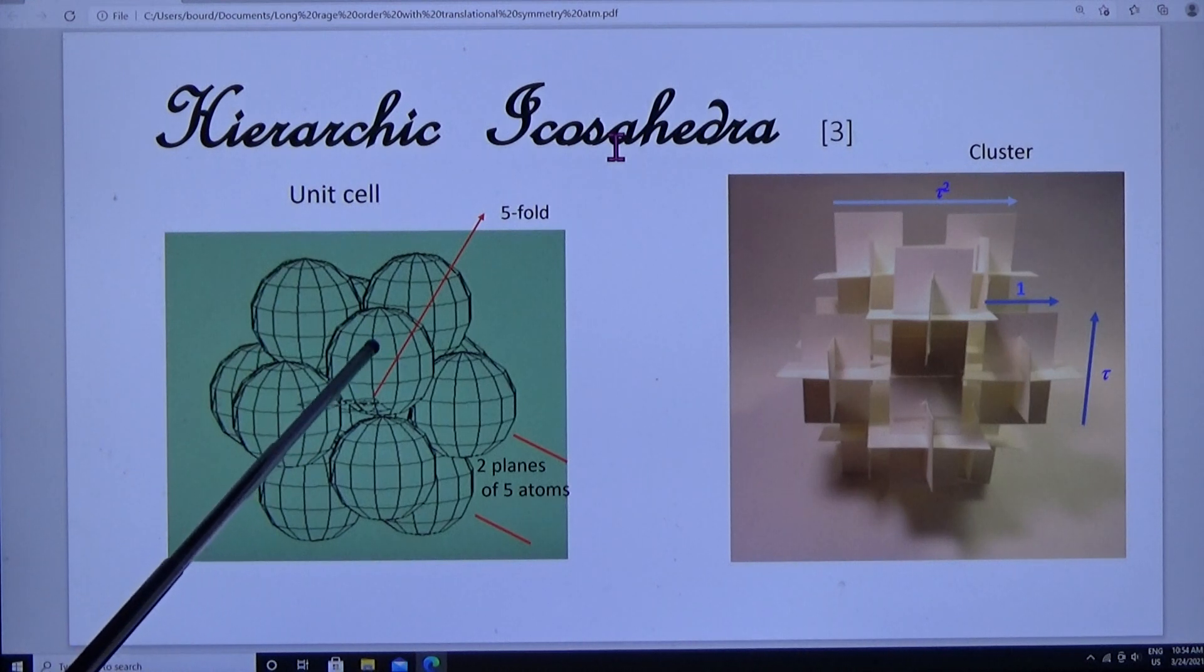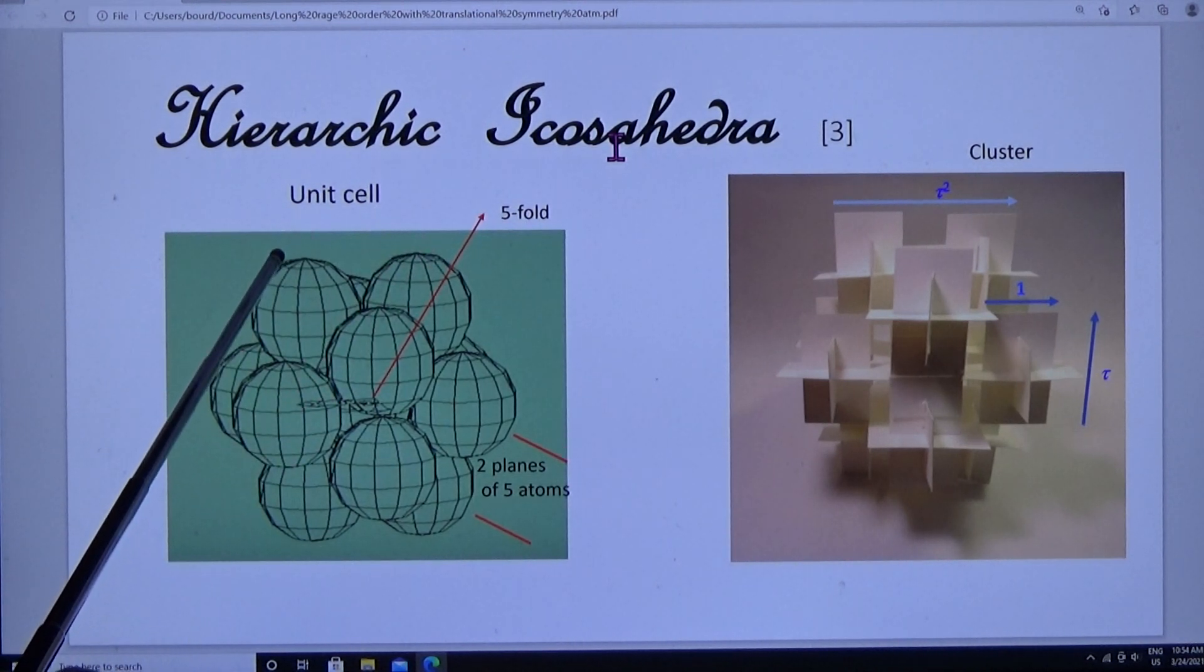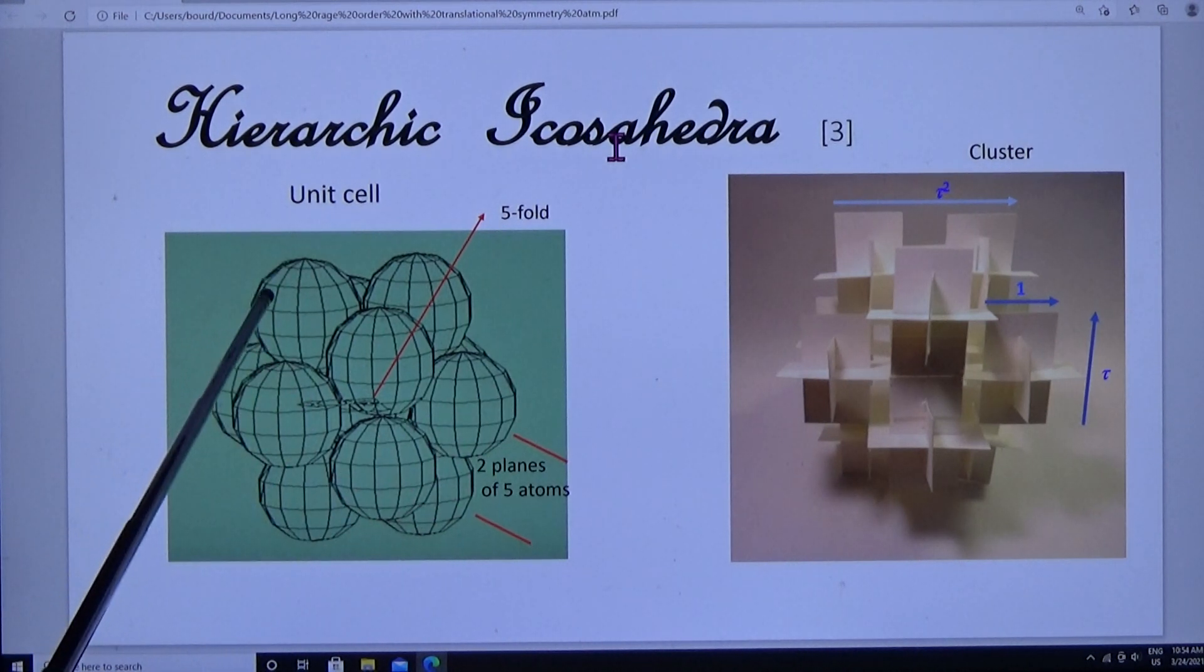The unit cells are edge-sharing, not face-sharing, so that the stoichiometry is aluminum-6 manganese.